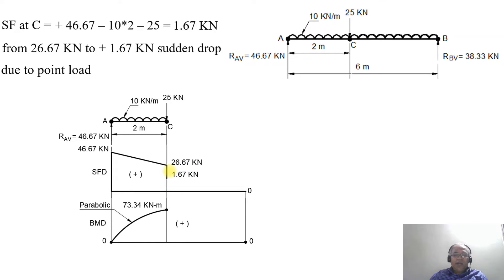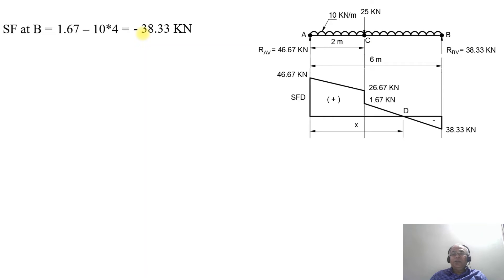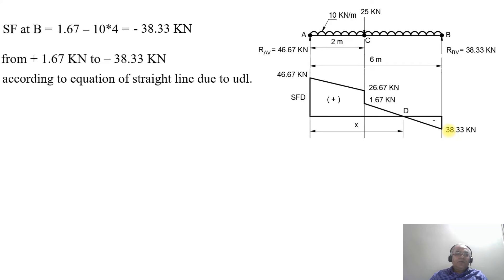There is no change in the bending moment at C because load × distance at point C equals zero. The parabolic curve of the previous section continues. Now considering from C to B: SF at B = 1.67 − (10 × 4) = −38.33 kN. So SF further drops from 1.67 kN to −38.33 kN at B along a straight line (due to UDL), meaning SF changes sign from positive to negative.